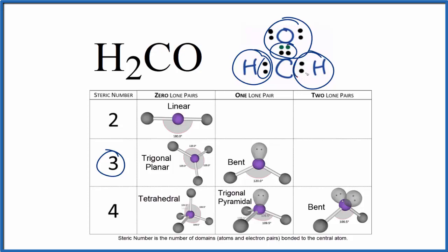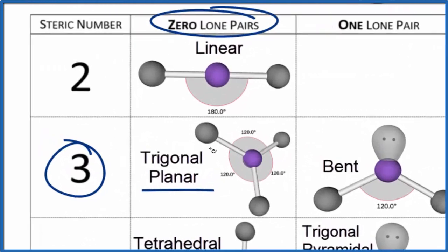These electrons here, they're all involved in chemical bonds. So zero lone pairs. It's trigonal planar and the bond angles there are 120 degrees.